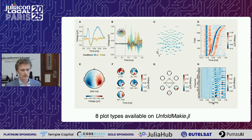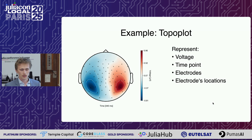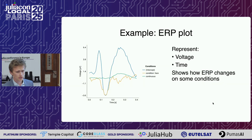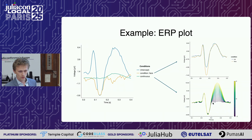And here is where UnfoldMakie comes in. Here you can see eight plot types currently available in our package, and there are more of course. For example, I'll tell you about two of them. One is the topoplot — it represents features like voltage at a specific time point, electrodes, and electrode locations. Another is the ERP plot, which shows voltage over time. You can also see how different conditions affect the basic ERP. The blue line is the basic ERP and green and yellow lines show how different predictors affect it, including variations for categorical and continuous predictors.